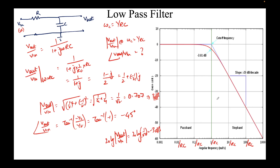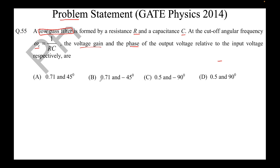Converting to decibels: 20 * log(1/√2) = −3 dB. So during the passband the gain is 0 dB, but at the cutoff frequency 1/RC the gain drops by 3 dB — this is also known as the 3 dB point. After the cutoff frequency, the gain drops at −20 dB per decade, as seen on the log-scale plot. Therefore, the correct answer is a magnitude of 0.707 (rounded) and a phase of −45 degrees.